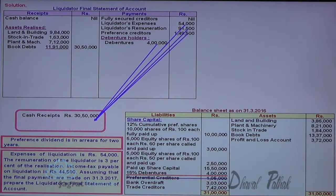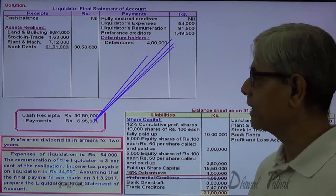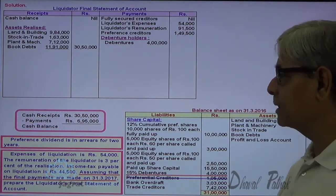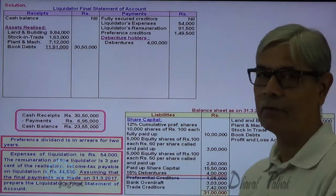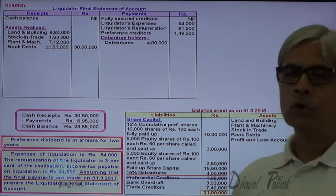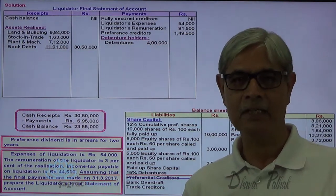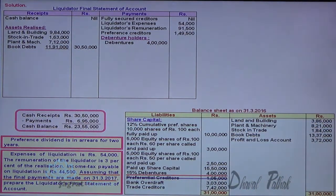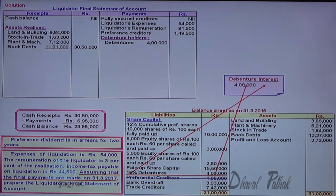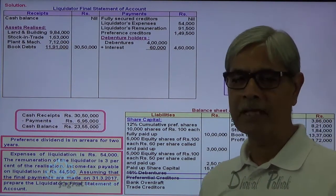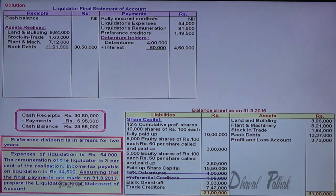Total receipts minus all these payments — the closing balance is 23,55,000. Creditors are just 7,42,000, so I have sufficient funds to pay them. Therefore I have to pay one year's debenture interest: 4 lakhs into 15% for 1 year = 60,000 interest to be paid to debenture holders. After making payment to debenture holders, I should make payment to creditors.